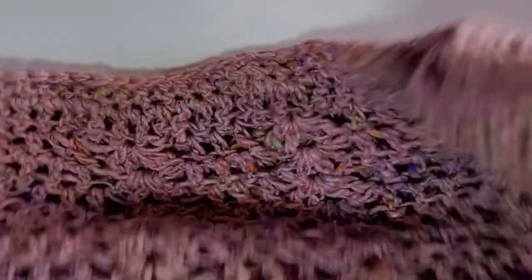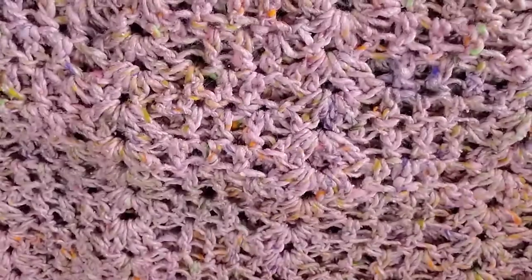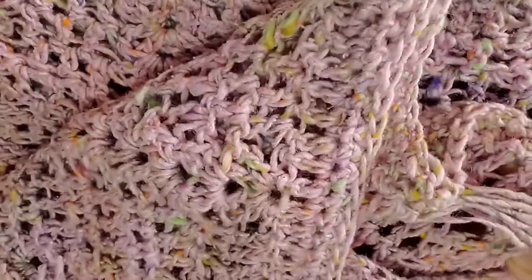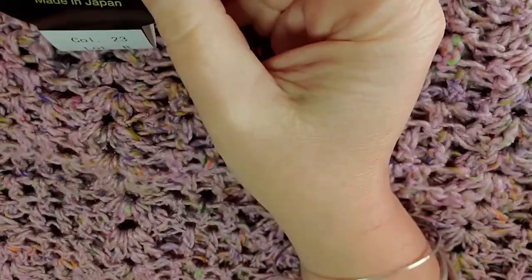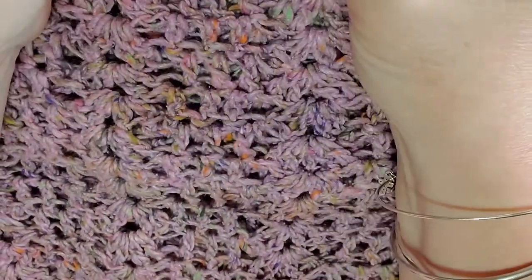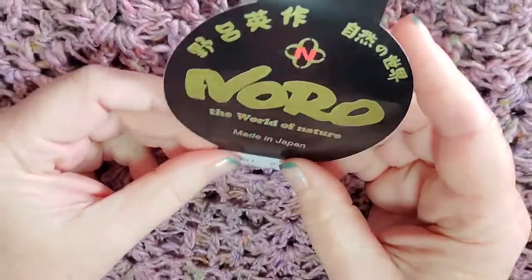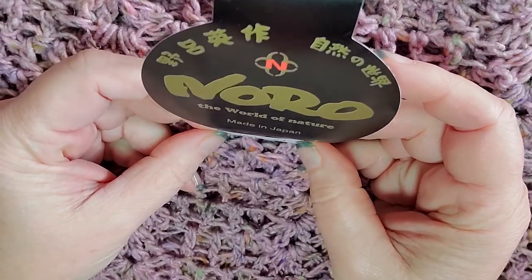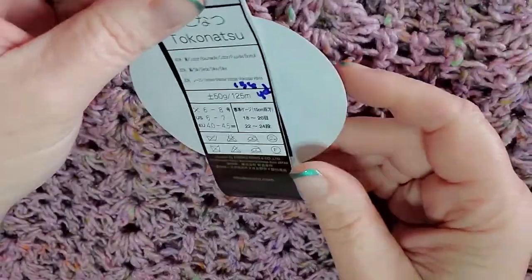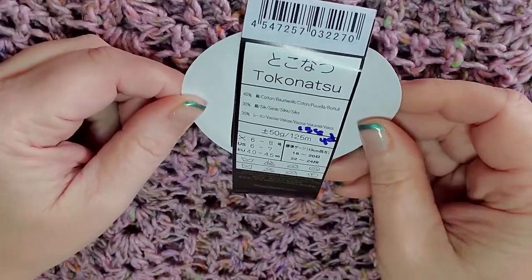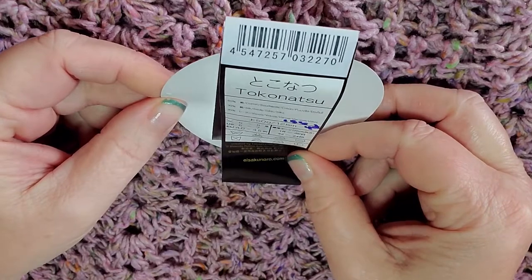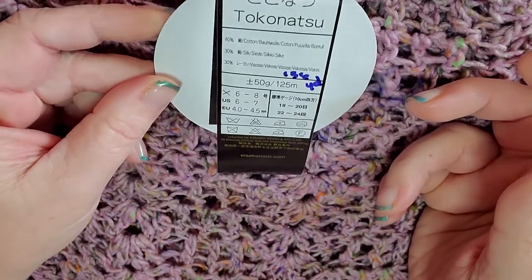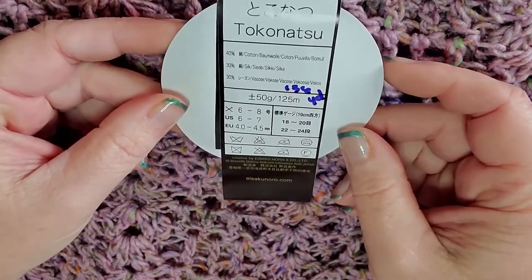Okay guys, so here is the shawl that you saw in the pictures in the beginning. For this I used Noro yarn. It is a four weight and it is the Takenatsu flavor of the Noro brand.